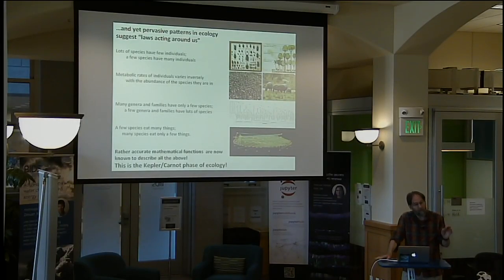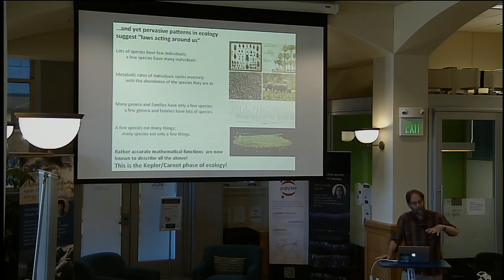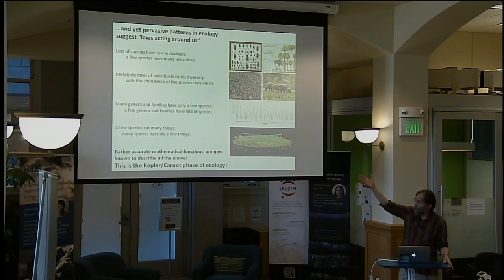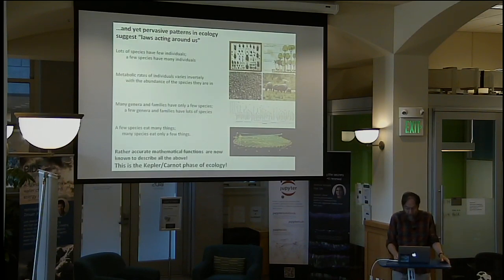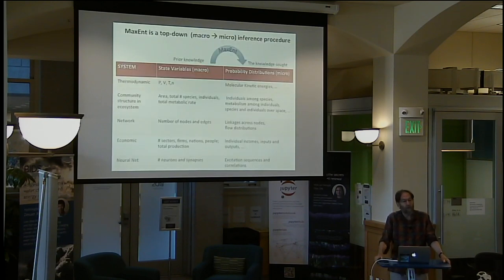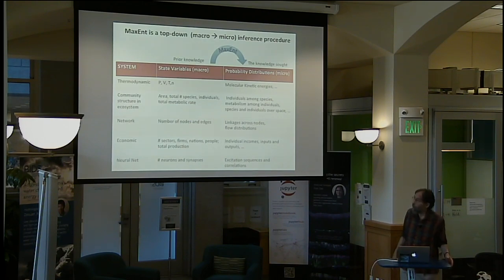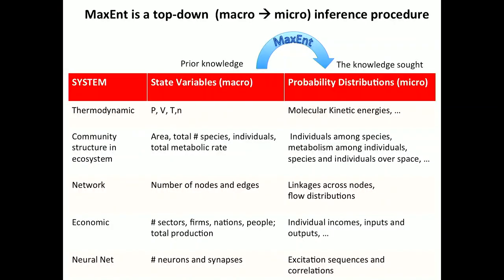In a sense, this is the Kepler phase of ecology. Kepler found the patterns from the data, and we see the patterns in the data. The question is, where are they coming from? And what I want to suggest is that a powerful way to understand quantitatively what those patterns look like is to make use of something called the maximum entropy principle.